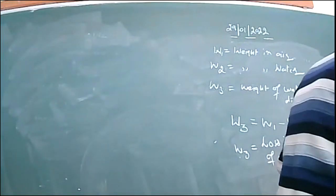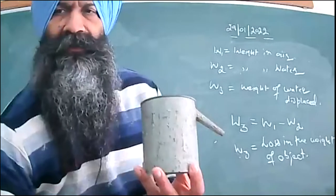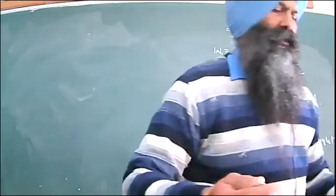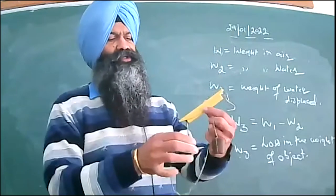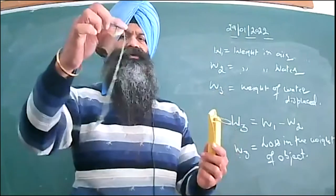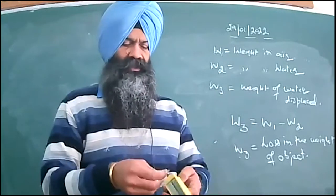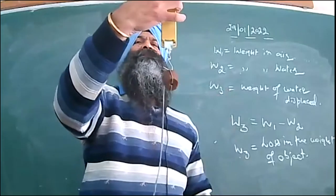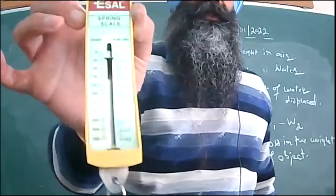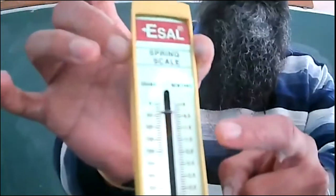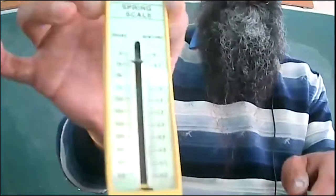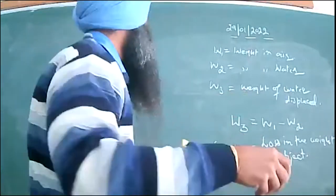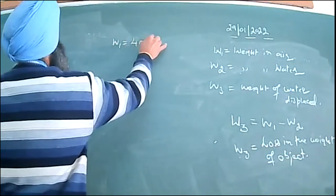Dear children, you have the overflow vessel, the spring balance, and the cork whose weight in air you want to find. Looking at the spring balance, the pointer is indicating 40 grams. So the weight of the object in air is 40 grams — W1 is equal to 40 grams.